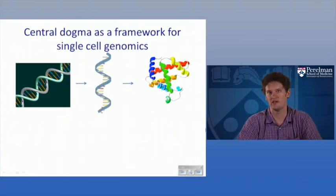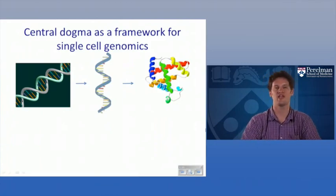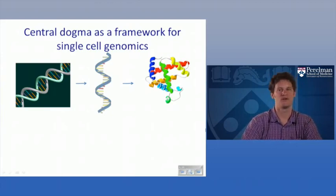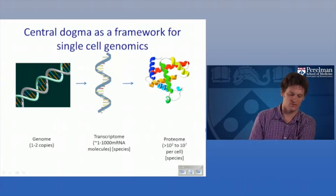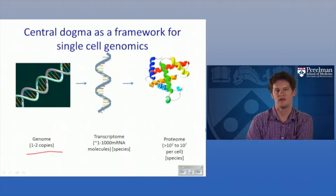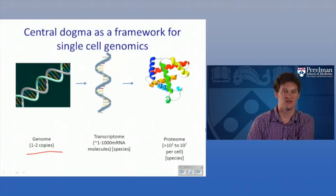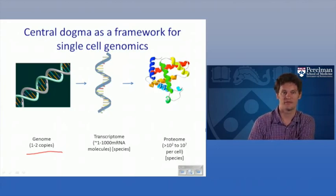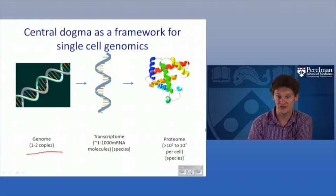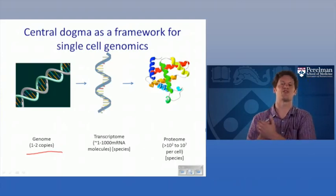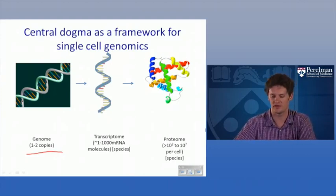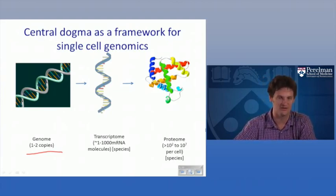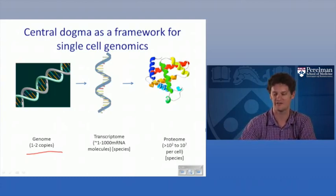For single cell genomics, the key challenge is amplification. In the context of the central dogma, the three main categories of molecules to measure at the single cell level: for DNA, each cell has one or two copies of the genome. Some genes are expressed, others are not — but you can have up to a thousand mRNA molecules from just one genomic copy. For the proteome, you can have from hundreds up to 10^7 molecules per cell. These are biological amplification steps taking one or two genomic copies all the way to 10^7 protein copies — a very high magnitude of induction.